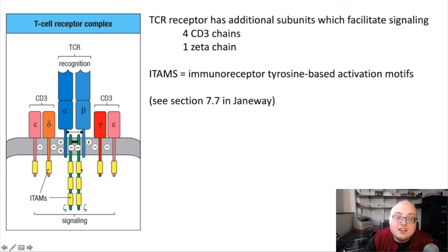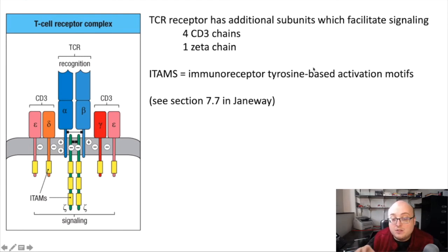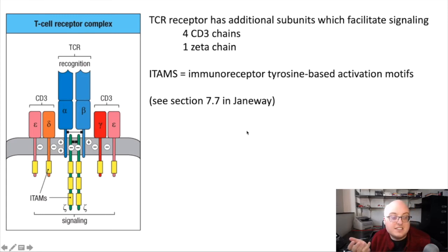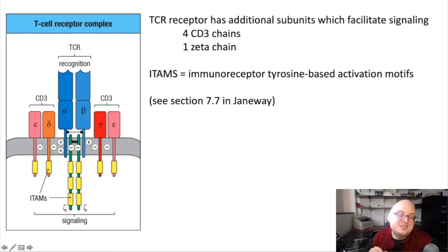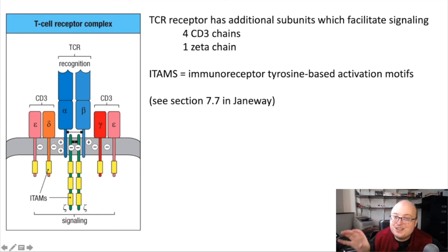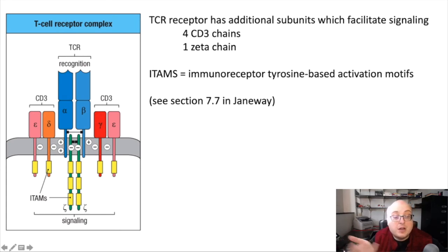The discussion of this part of the T-cell receptor is covered in Chapter 7. We're skipping a little bit ahead because we won't cover the whole chapter in this course—we'll hit the highlights in this lecture. If you want to learn more about the signaling we're discussing, you can look at Chapter 7 in the textbook. The ITAMs on CD3 and the zeta chain recruit other signaling molecules—one of the most important is a molecule called ZAP70.